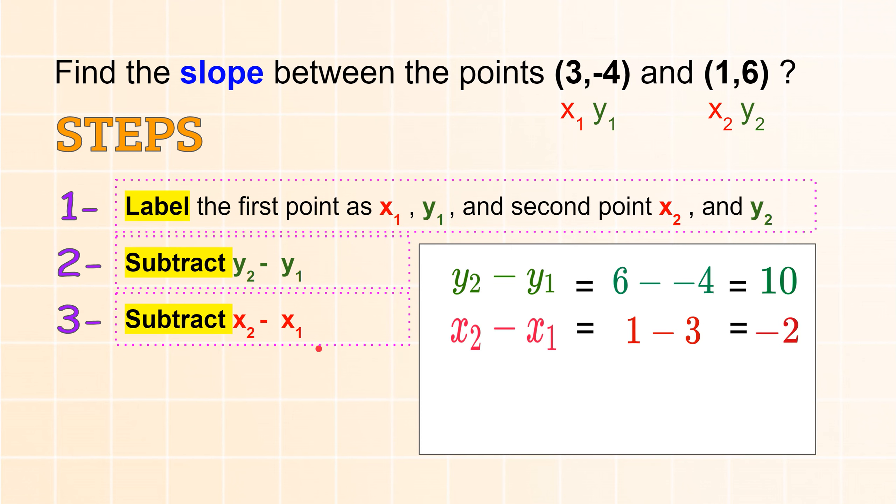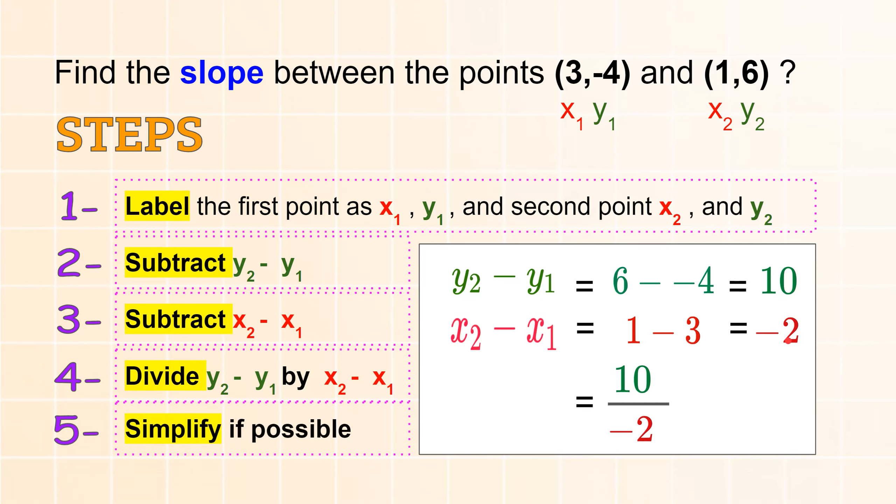And the fourth step is to divide step 2 over step 3. Whatever you found, the difference of the y divided by the difference of the x. And that's my fourth step. So we're going to divide the green one, 10, over negative 2.